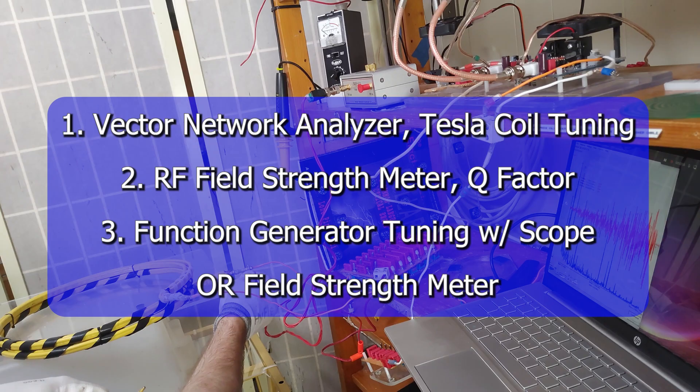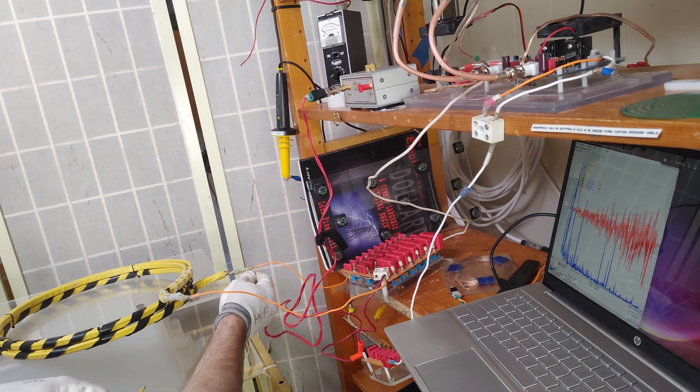First I'm using the vector network analyzer on the primary coil alone, then the secondary coil alone, then the two coupled together. When they're coupled together you'll see two resonant peaks on the display.